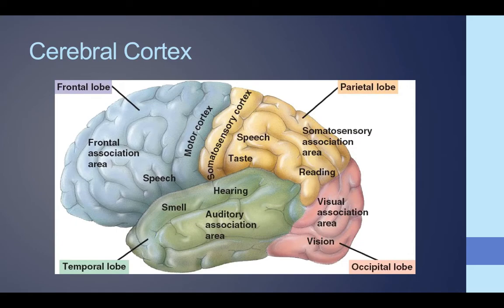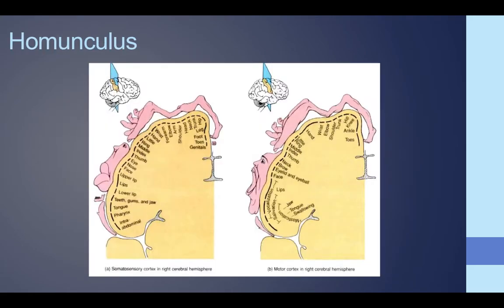There are also two very important areas: the motor cortex and the somatosensory cortex. Damage to either of these will produce different types of motor or sensory findings in the case of brain damage or stroke. The homunculus is a representation of the amount of innervation to the brain, whether in the somatosensory cortex or the motor cortex. Different parts of the body are more highly innervated — notably the face and the hands.